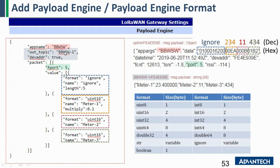You can see the MQTT topic here is BBWSW-1. You subscribe to the topic with the device address, then you can receive the data. In the content of the packet there are two items. The first one is the f-port, which is the port your sensor uses to send the data — it depends on your sensor, and you can configure your port in this script.